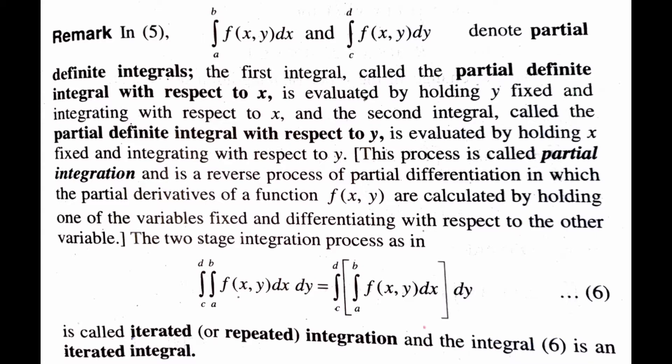This process is called partial integration and is the reverse process of partial differentiation, in which the partial derivatives of F(x,y) are calculated by holding one variable fixed and differentiating with respect to the other. The two-stage process — integral c to d of (integral a to b of F(x,y) dx) dy — is called iterated or repeated integration, and the integral is called an iterated integral.